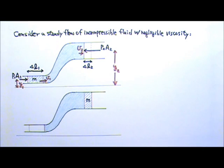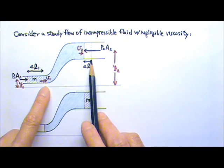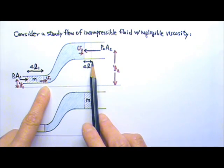Suppose that in a certain time interval, the fluid travels a distance of delta L1 on the left side and delta L2 on the right side.